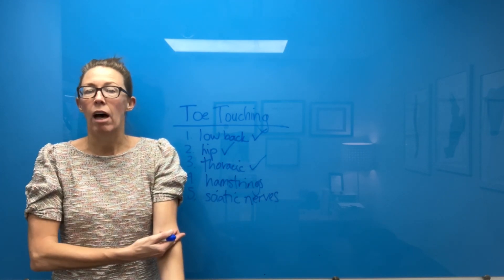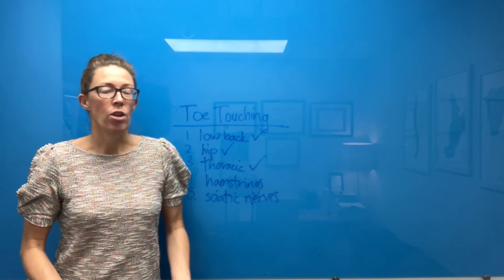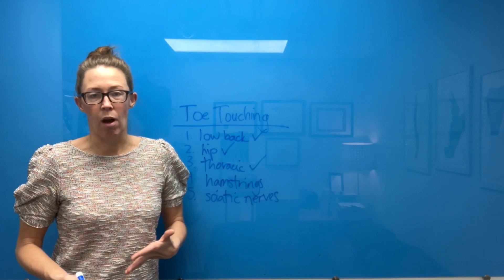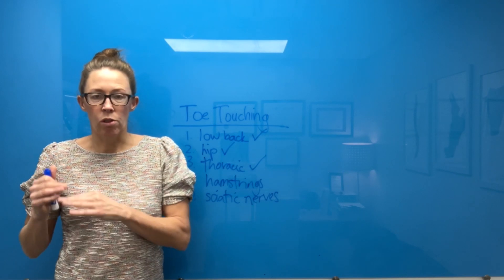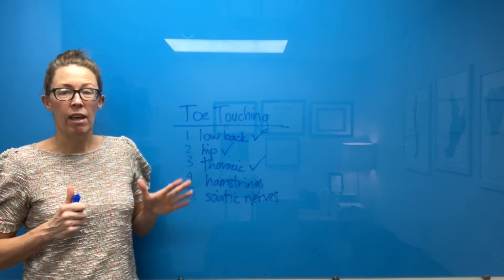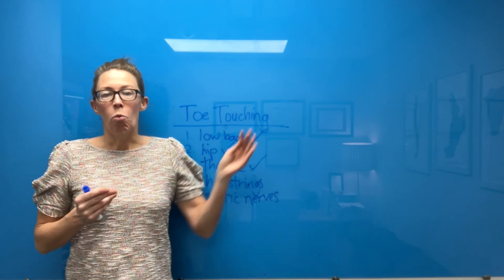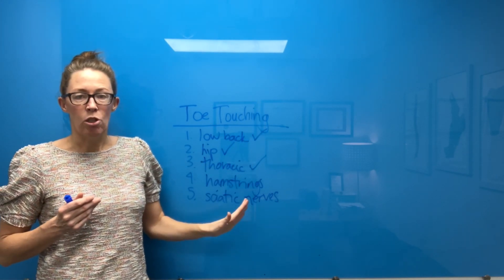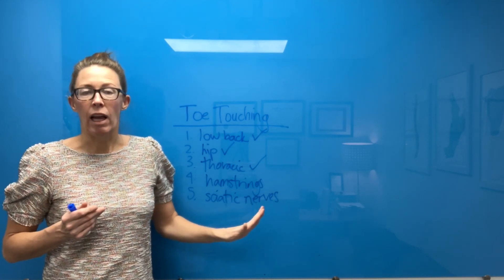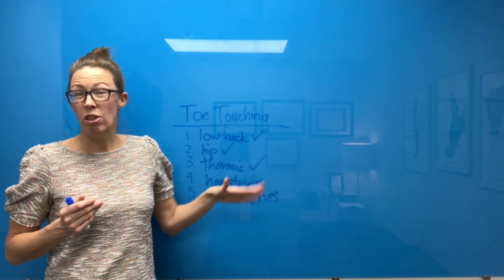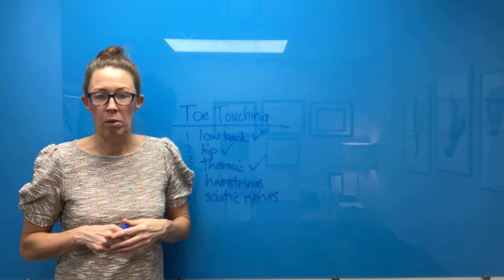There are other things that are needed to touch your toes. For example, you need to have long enough arms, you need to not have a shoulder mobility problem. We could get into all those little things, but these are the five main things I'm thinking of. So how do I figure out what of these five things is causing any lack of mobility? Or how do I determine if there is a lack of mobility?